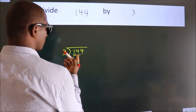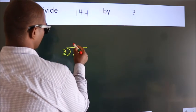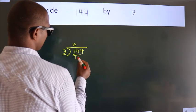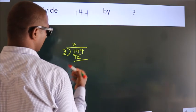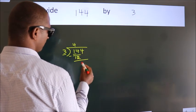A number close to 14 in 3 table is 3 fours, 12. Now we should subtract. We get 2.